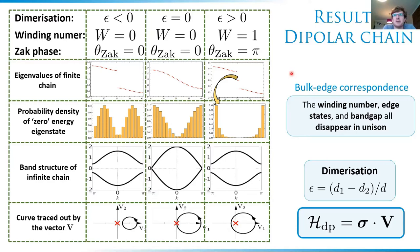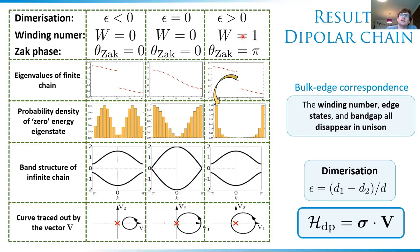This is a quick summary of the bulk-edge correspondence. There is a winding number — does this loop wind around the origin or not? In the non-trivial case it winds once; in the trivial case it doesn't. The winding number, the presence of edge states, and the band gap all disappear or appear in unison. You can also look at classes of disorder and perturbation and show that under certain classes the winding number is not changed, concluding that these edge states are topologically protected. These are results reproduced in the context of this plasmonic chain, but it's essentially the SSH model — an introduction.